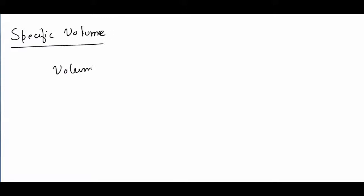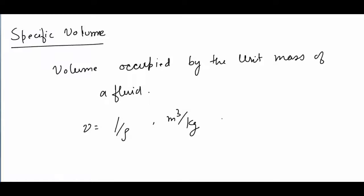Another property is specific volume. It is defined as the volume occupied by the unit mass of fluid, so it is nothing but one by rho. Unit is meter cube per kg. Anything which has the specific term attached to it suggests that the quantity is divided by the mass.